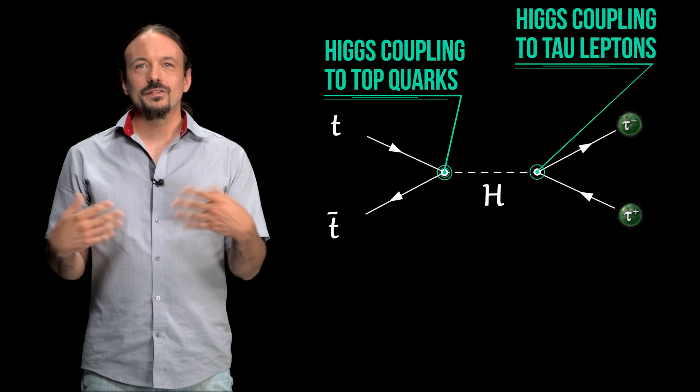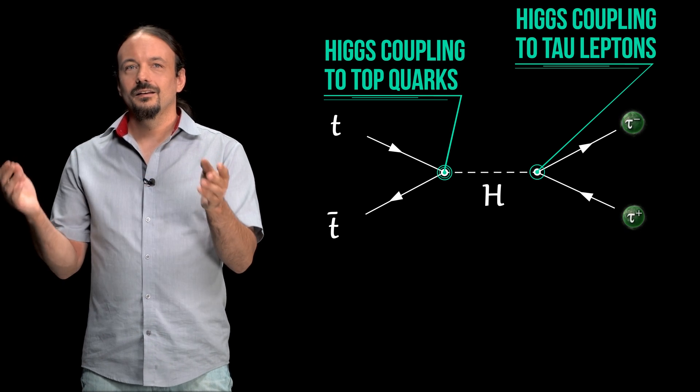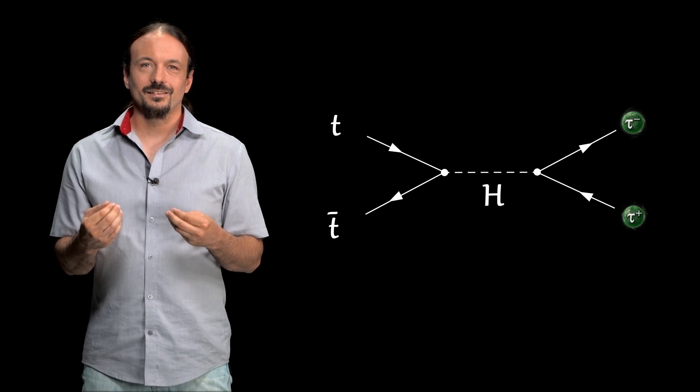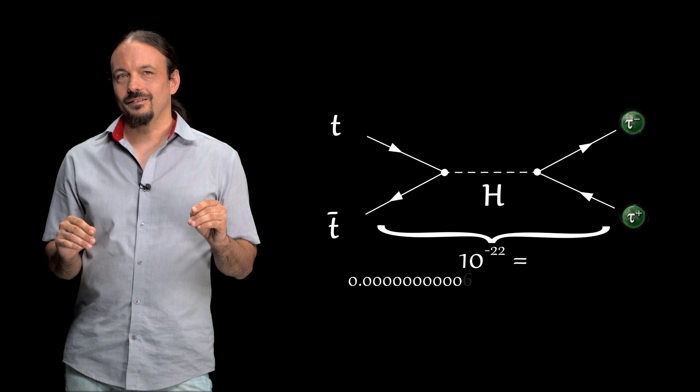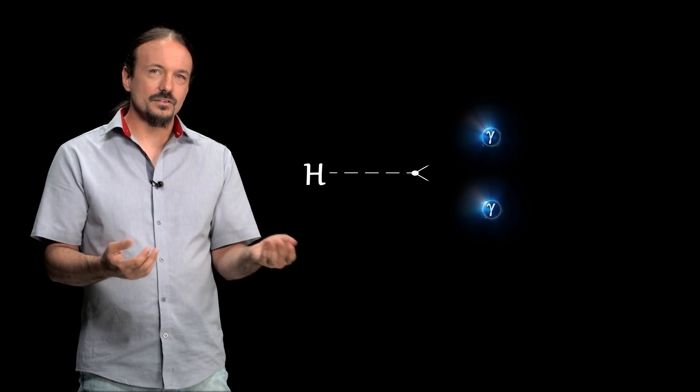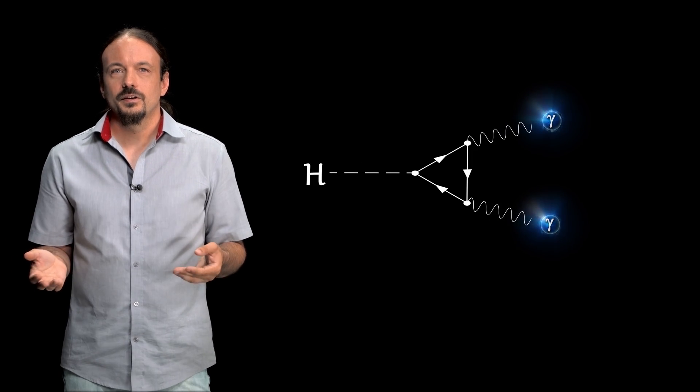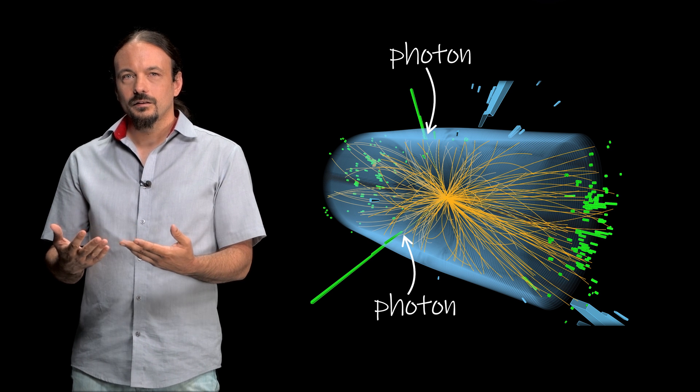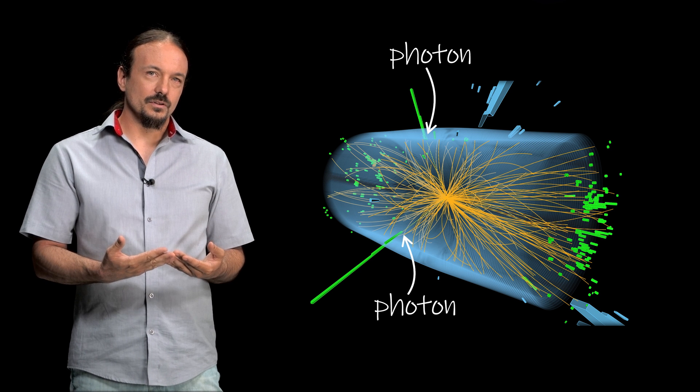The problem is that the whole interaction, production and decay, happens in the tiniest instant, about 10 to the minus 22 seconds. And in our detector, we can only see what's left after the interaction. So, for example, if the Higgs decays into two photons, we'll see two photons. So we can tell how the Higgs decayed, but how can we tell how it was produced?